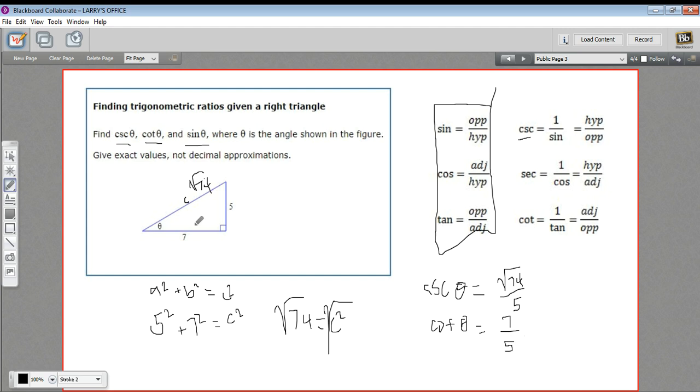And finally, we have the sine. So the sine of theta is the opposite over the hypotenuse. The opposite is 5, and the hypotenuse is the square root of 74.